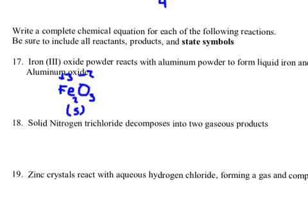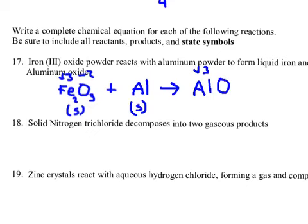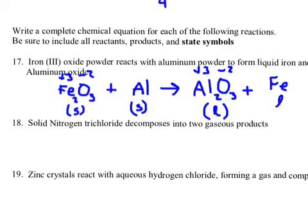To form liquid iron and aluminum oxide. Aluminum is plus 3, oxygen is minus 2 — giving me a two-to-three ratio: two aluminums, three oxygens. I was told it's liquid, so I put (l) underneath it. And iron (Fe) — uncombined element alert: is this a pesky seven? It is not, so I leave it as is. But I was told it's liquid, so I write an L underneath it.